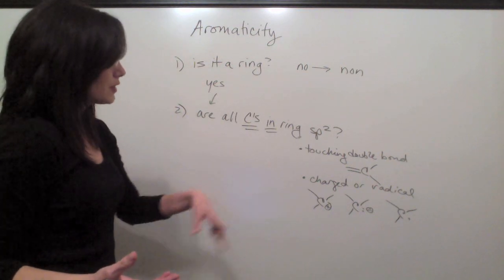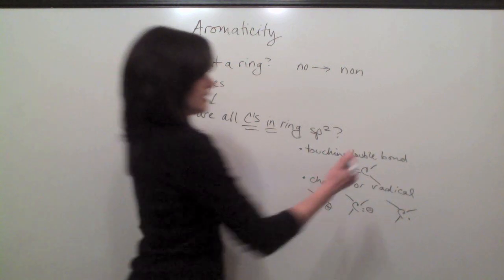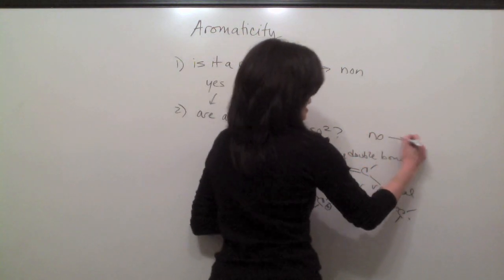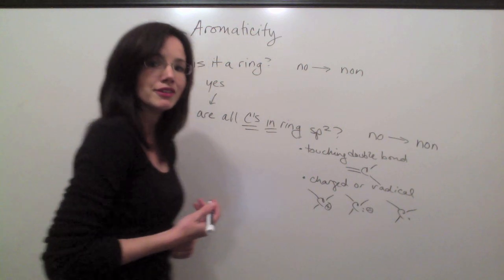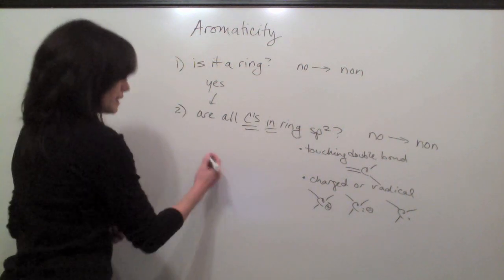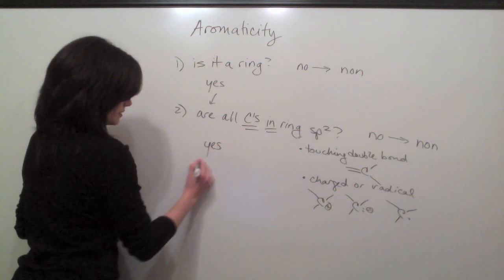So if you look at your carbons in your ring, and some of them are not sp2, you know you have a non-aromatic compound. But if all the carbons in your ring are sp2, then you move on to number three.